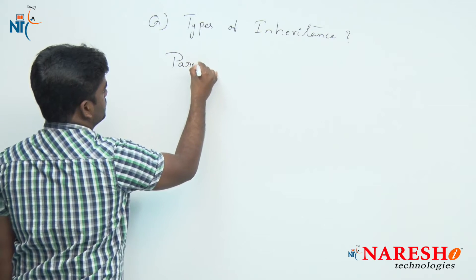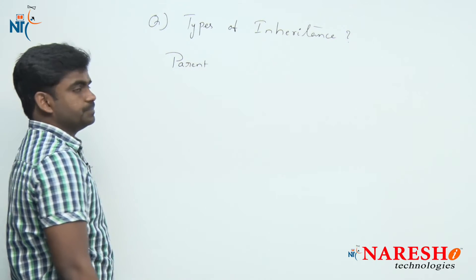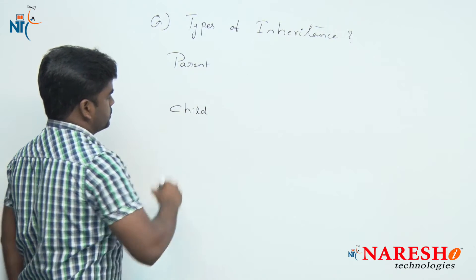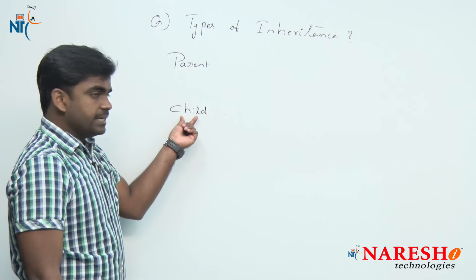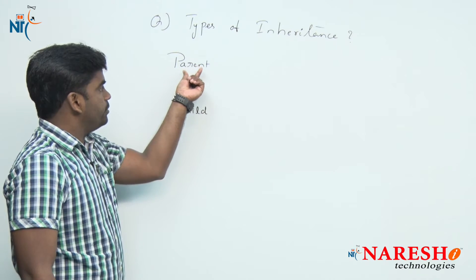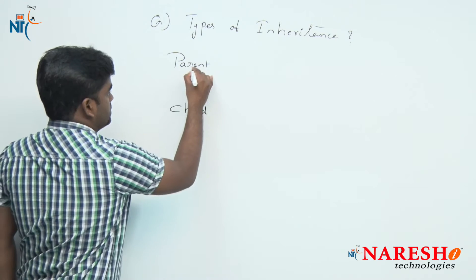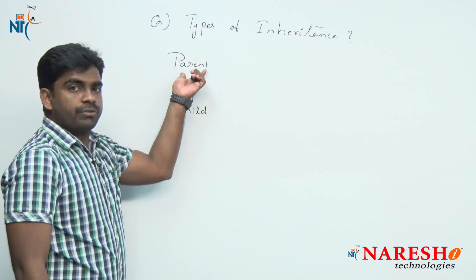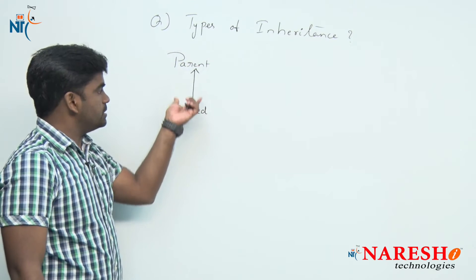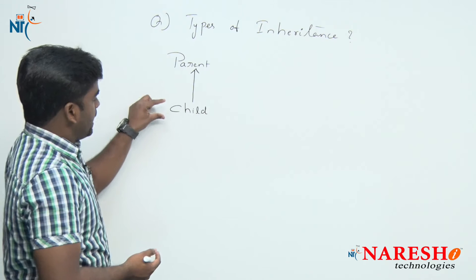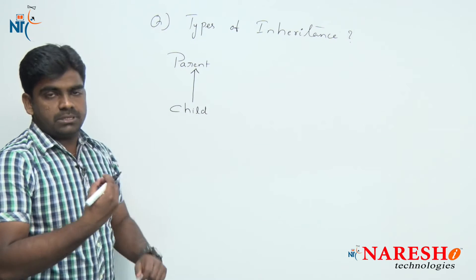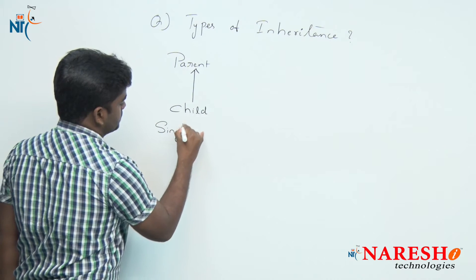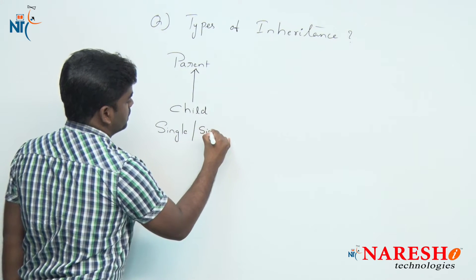Here there is one parent class and one child class. The child class is extending the functionality of the parent class. In UML notation, the arrow mark should point to the class from where we are extending — this is an extension relation. Accessing only one class's members, i.e., extending the functionality of only one class, is called either single inheritance or simple inheritance.